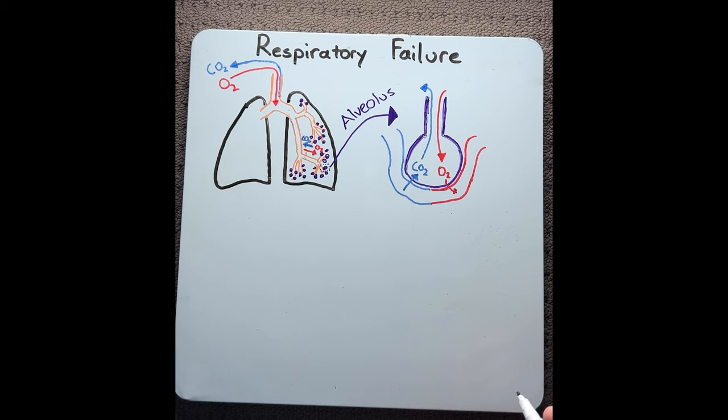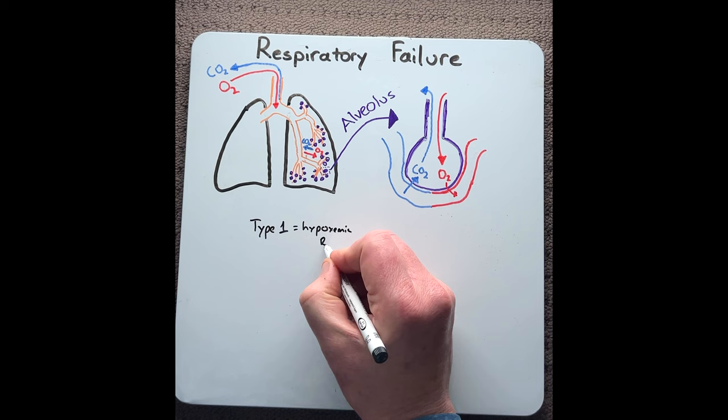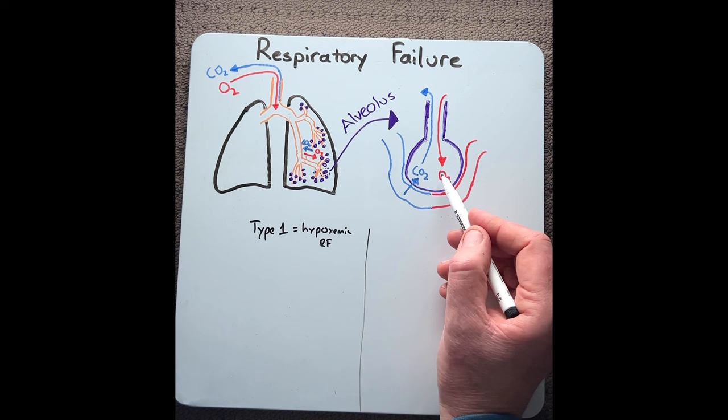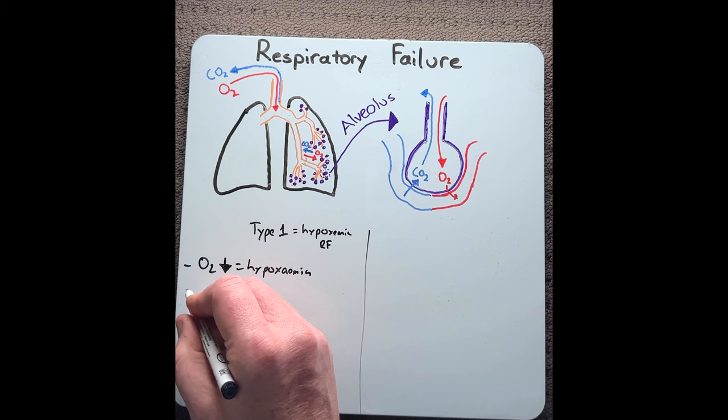Type 1 respiratory failure is also known as hypoxemic respiratory failure. In type 1 respiratory failure, this is where the respiratory system cannot adequately oxygenate the bloodstream. What we would see is a decrease in O2 in our blood, which is known as hypoxemia, whilst CO2 remains fine or slightly low.